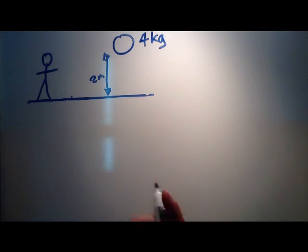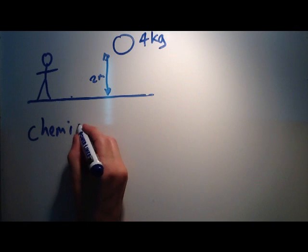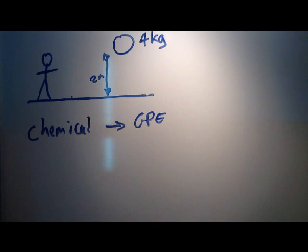We know there's some energy being transferred here. The first one we know is the person—well, they are a store of chemical energy, and they are transferring that chemical energy into gravitational potential energy. The way they do that is by doing work.